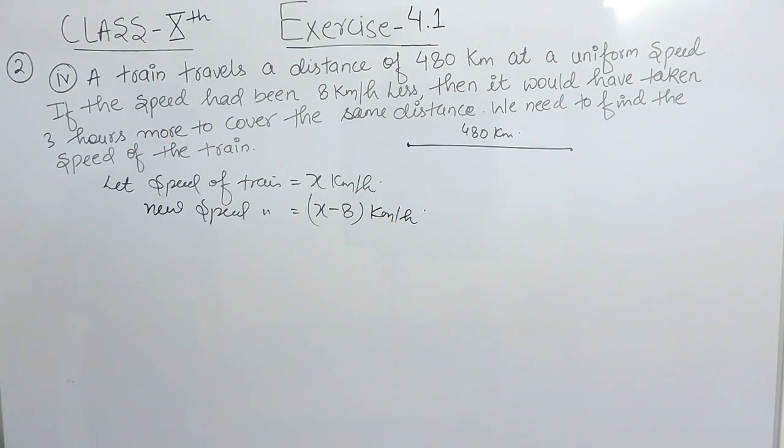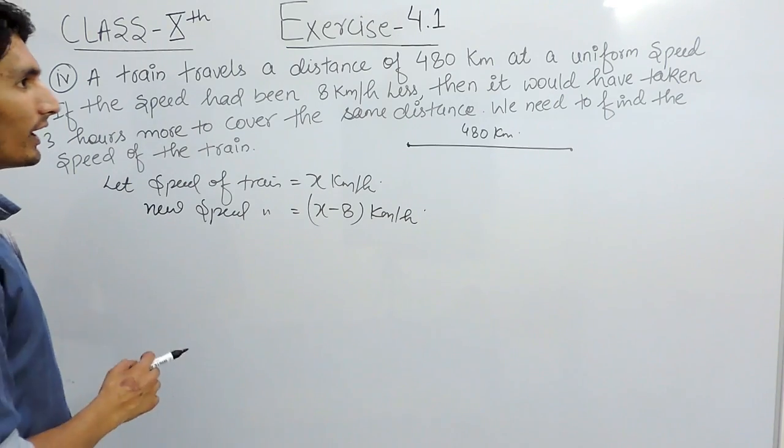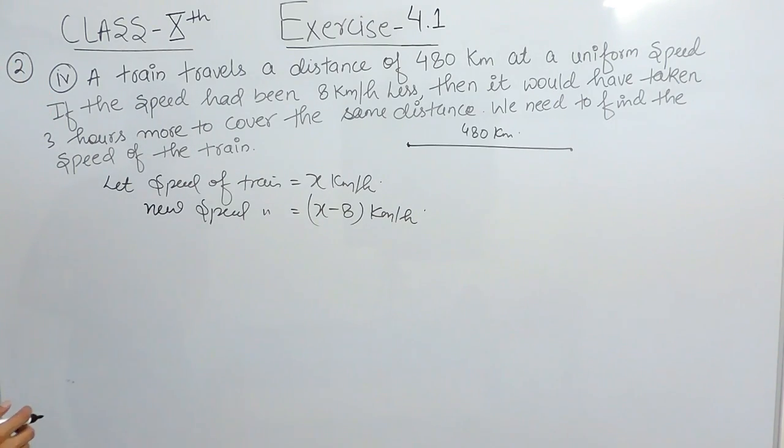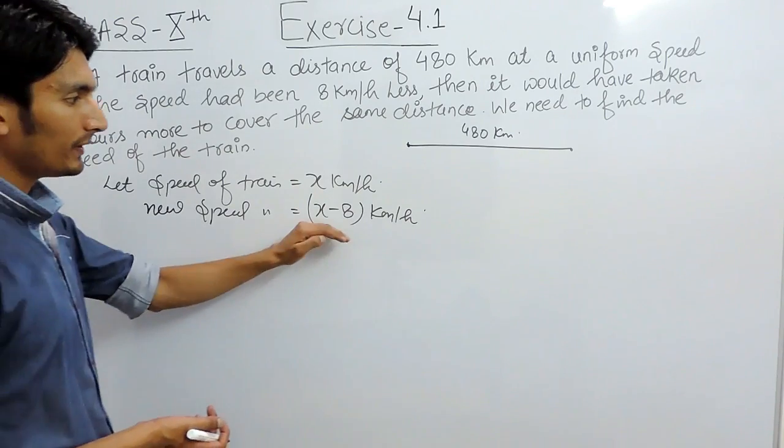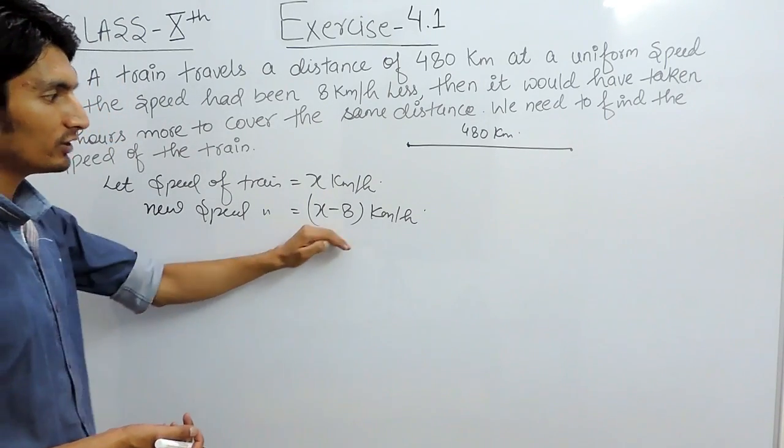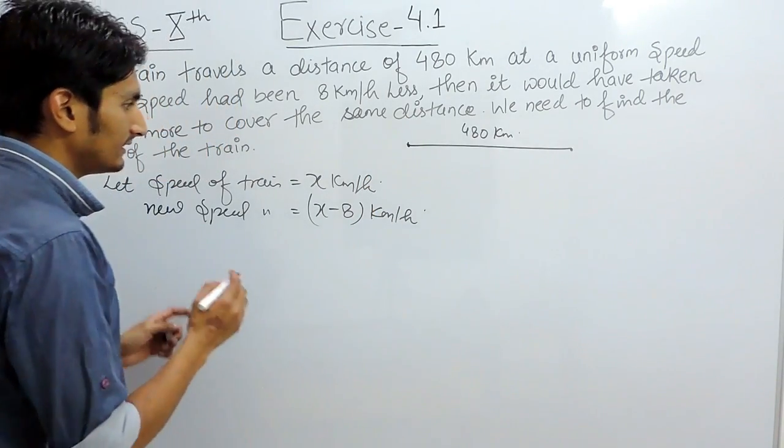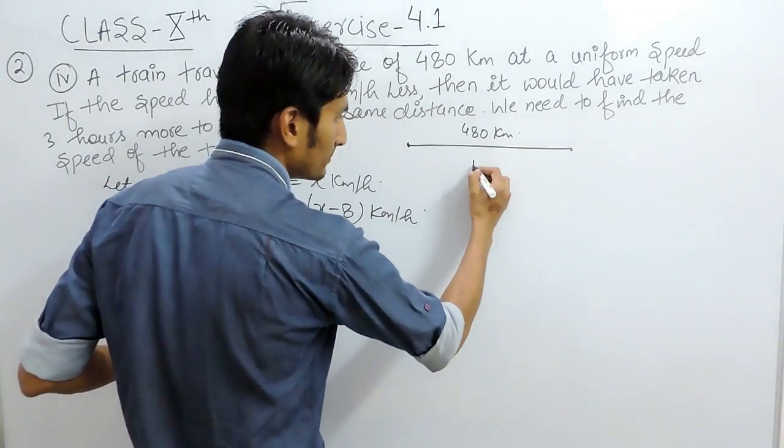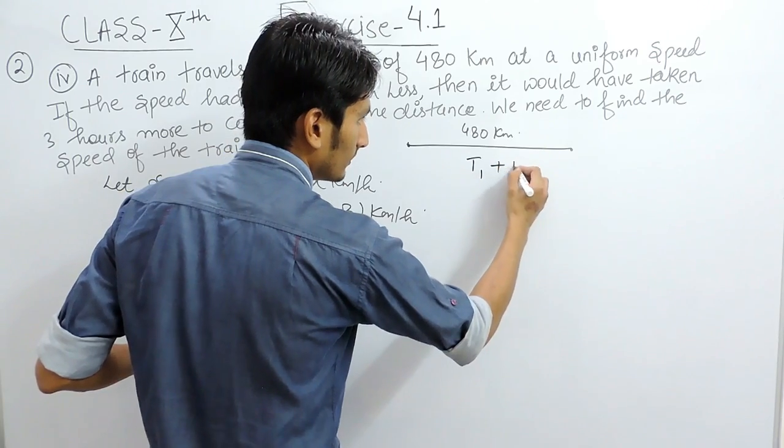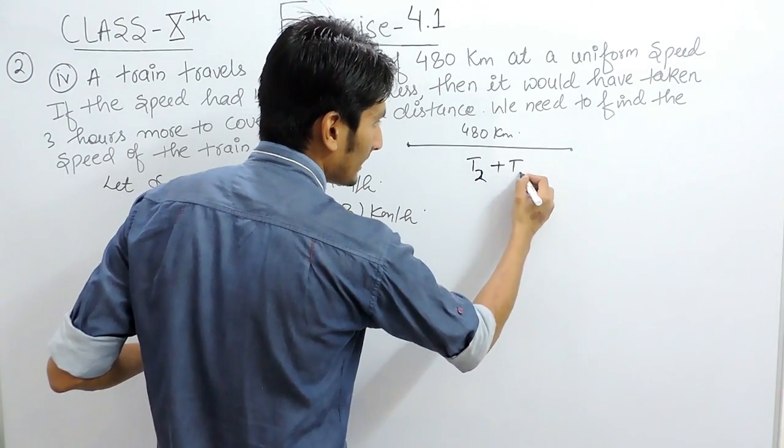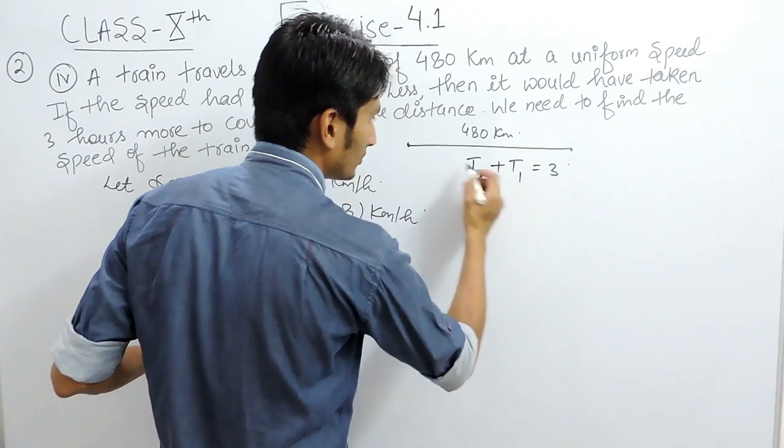In the last part it is given that it would have taken 3 hours more to cover the distance. Obviously, when the speed gets lower or you reduce the speed, time should be more. In this case, the difference between second time and first time is given as 3 hours.